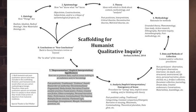After situating ourselves among these four interconnected points — ontology, epistemology, theory, and methodology — we then reach decisions about method, such as interviews, participant observation, artifact collection, or in other words, the procedures we use to generate data.